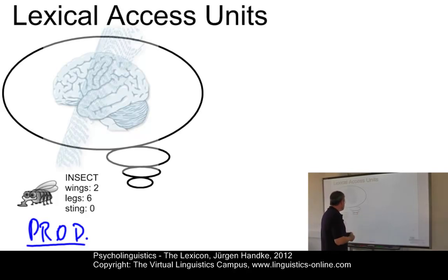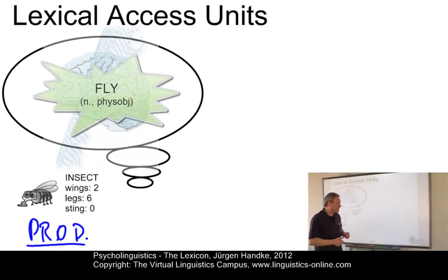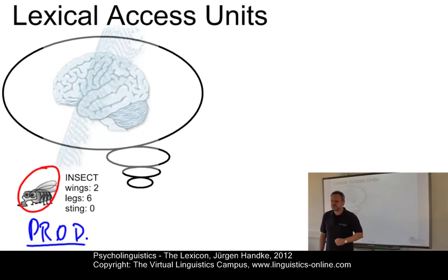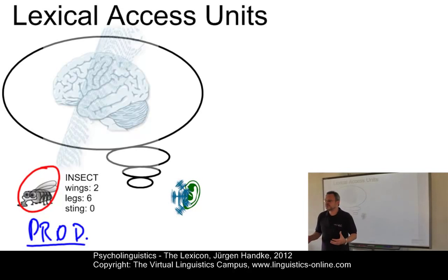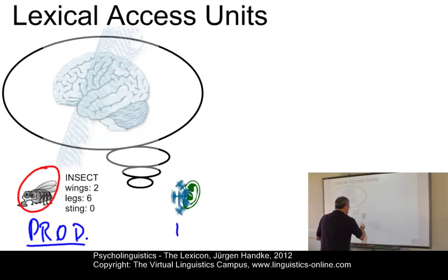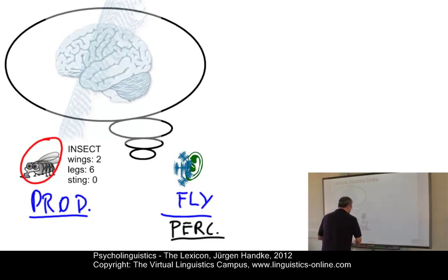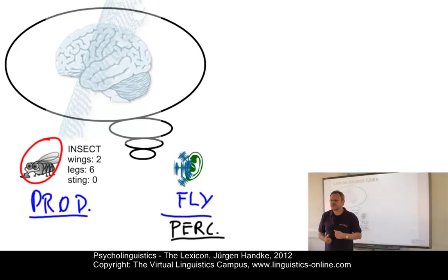We could ask: what is an insect that has two wings, six legs, and no sting? And immediately we would activate the word 'fly.' Alternatively, we could show a picture. In speech perception, the access unit is something completely different — namely, an acoustic representation, a bundle of acoustic properties or a set of geometrical shapes. We could access the lexicon by simply writing down the word 'fly.' This is language perception, the process which will eventually lead to comprehension of what someone says to us.